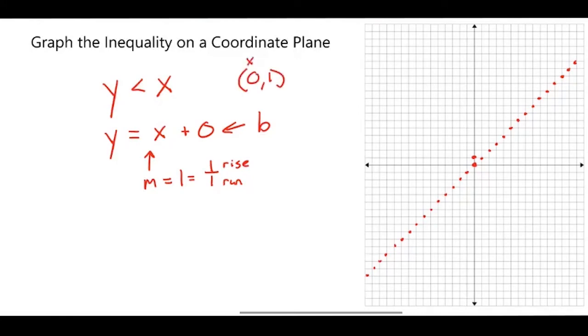So I will plug in for x and y, 0 and 1 to see if it is true. So y is 1, is less than x, which is 0. 1 is less than 0. That is not true. So I will shade the side of the graph that does not include 0,1. And that's how you graph the inequality y is less than x.